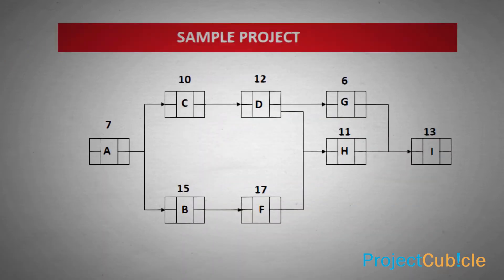In this example A, B, C, D, F, G, H, I are the activities. Numbers above the boxes are the durations.